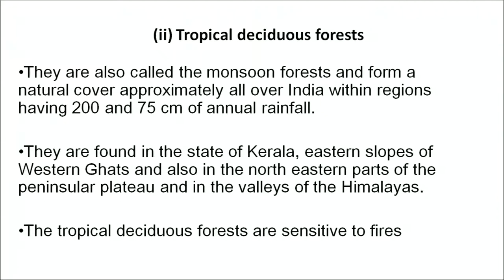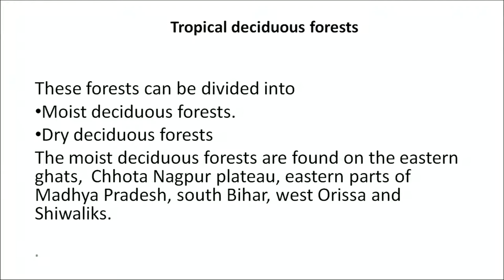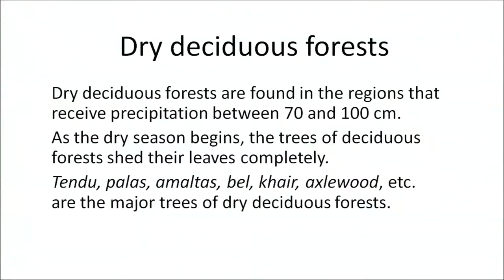Tropical deciduous forests are very sensitive to fires and can be divided into moist deciduous and dry deciduous forests. Moist deciduous forests are found on the Eastern Ghats, Chhota Nagpur Plateau, eastern parts of Madhya Pradesh, South Bihar and West Orissa. Dry deciduous forests are found in regions receiving precipitation between 70 to 100 centimeters. As the dry season begins, the trees shed their leaves completely. Tendu, palash, amaltas, bael, khair and axlewood are major trees of the deciduous forests.